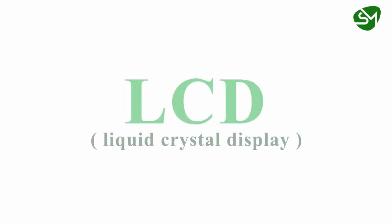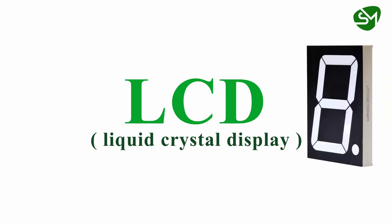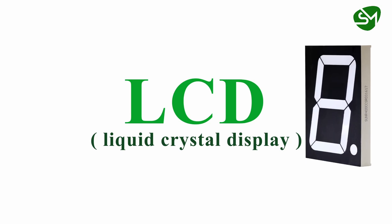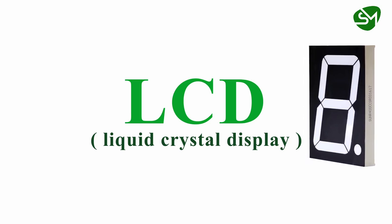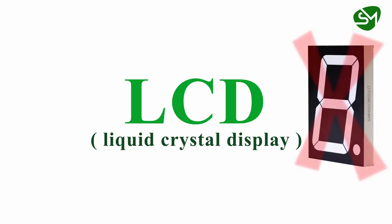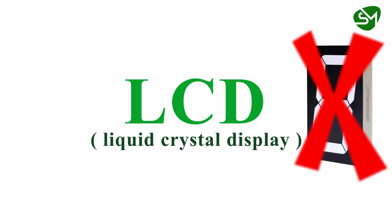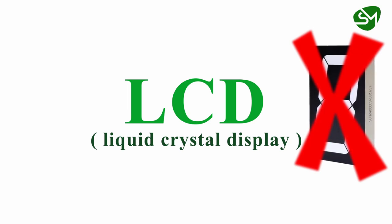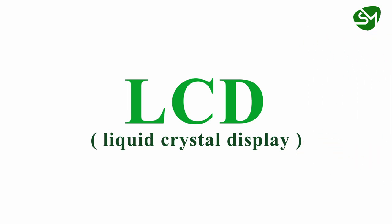In this lecture we are going to see the working of LCDs. The seven segment display can only display numbers, but for displaying characters and alphabets we cannot use the seven segment display, as this LED arrangement cannot fulfill this purpose. So for this purpose we are going to use LCD displays.